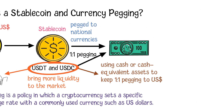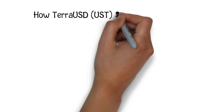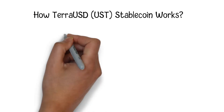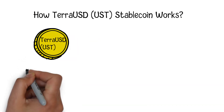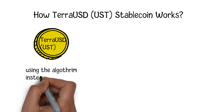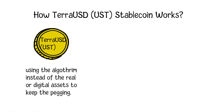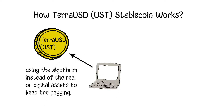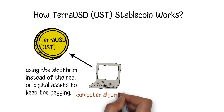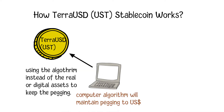In comparison, TerraUSD, the third largest stablecoin, uses an algorithm instead of real or digital assets to keep the pegging. UST is an algorithmic stablecoin, which means its pegging to the US dollar is maintained by computer code instead of real or digital assets.